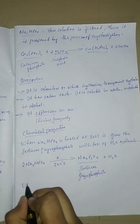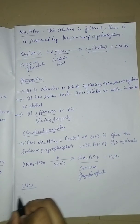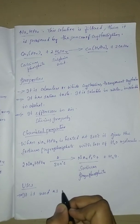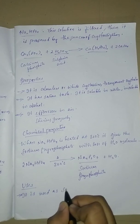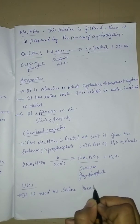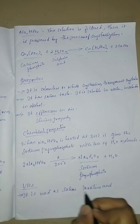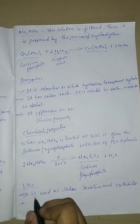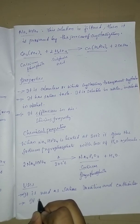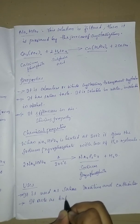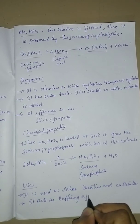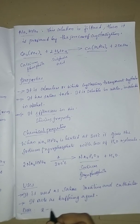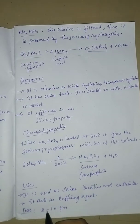Let us discuss the uses of sodium orthophosphate. It is used as a saline laxative and cathartic. It also acts as a buffering agent. The dose is 2 to 16 grams when administered.